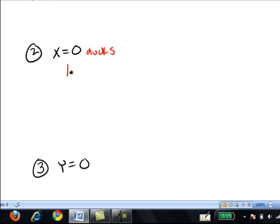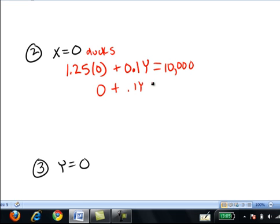So we have 1.25 times 0 plus 0.1y equals 10,000. That is, 0 plus 0.1y equals 10,000, or just 0.1y equals 10,000.